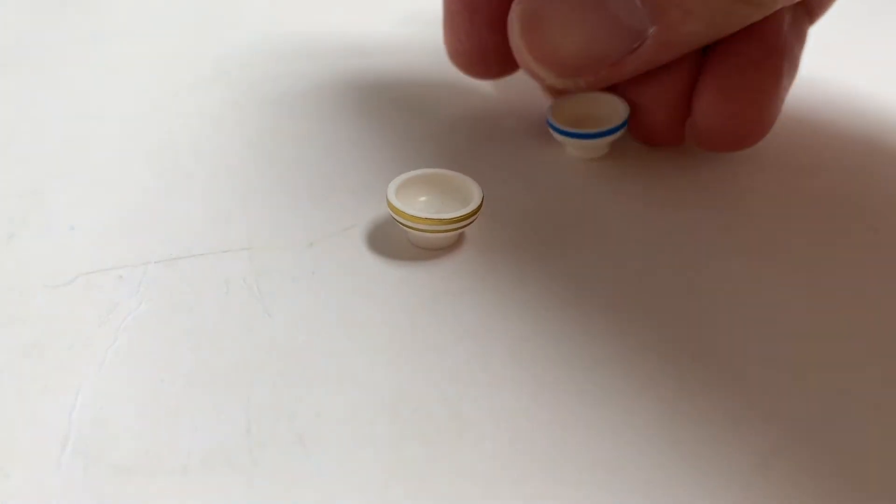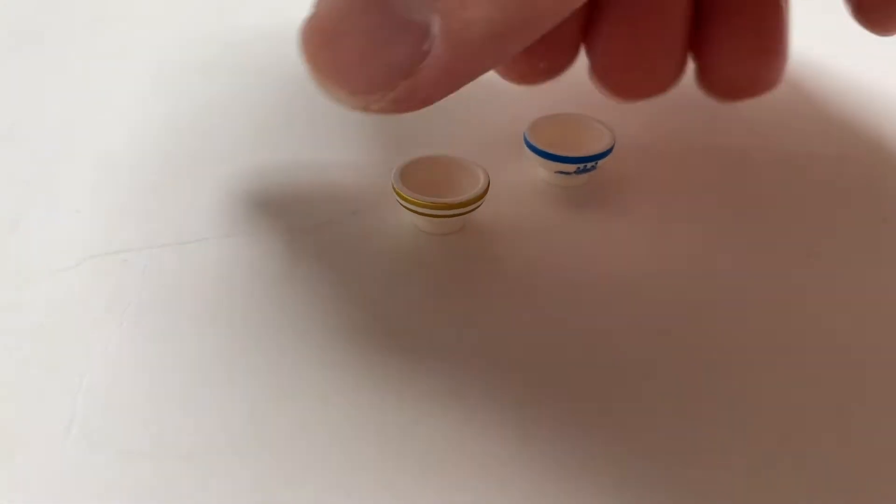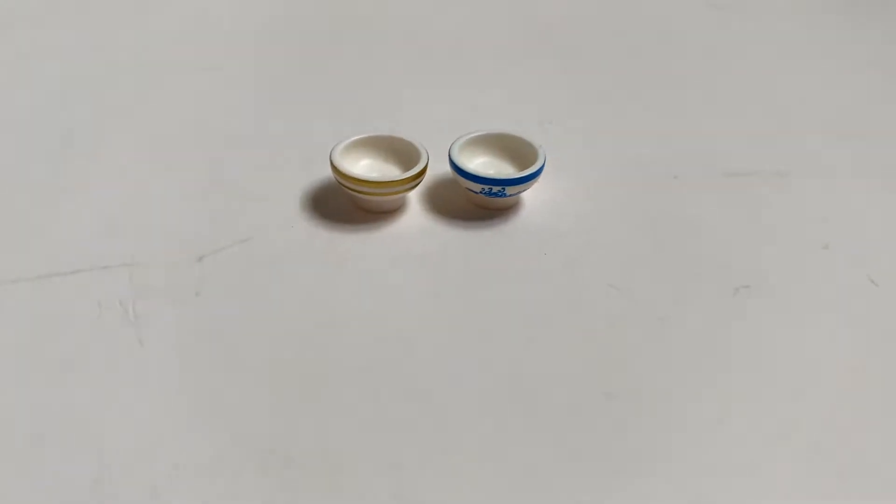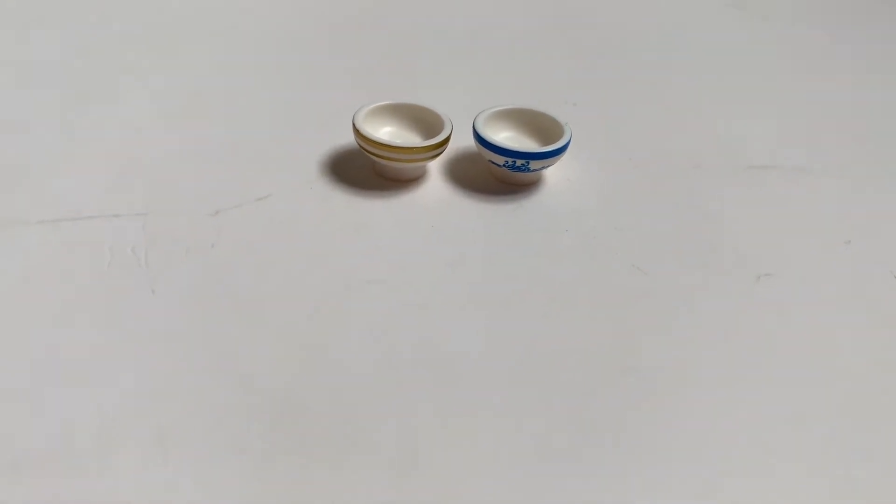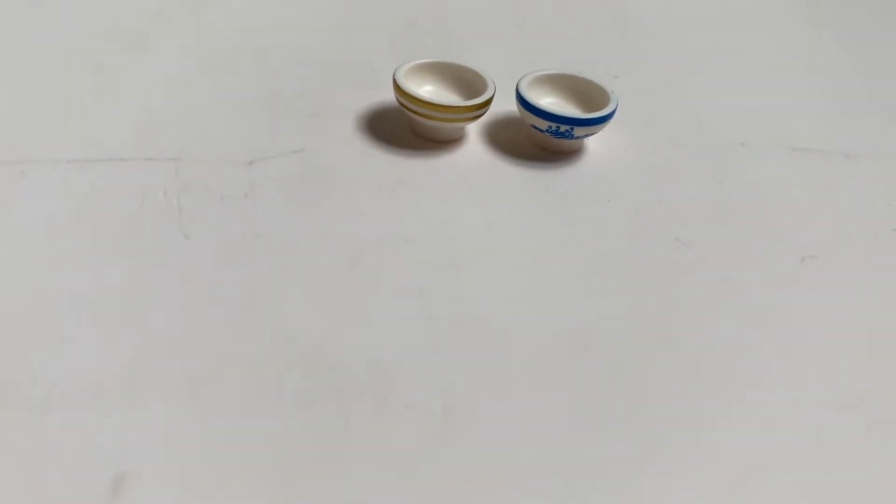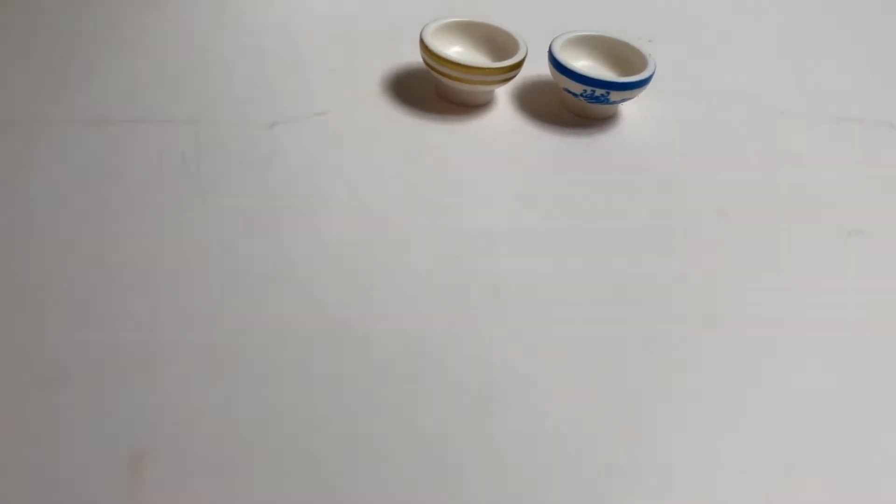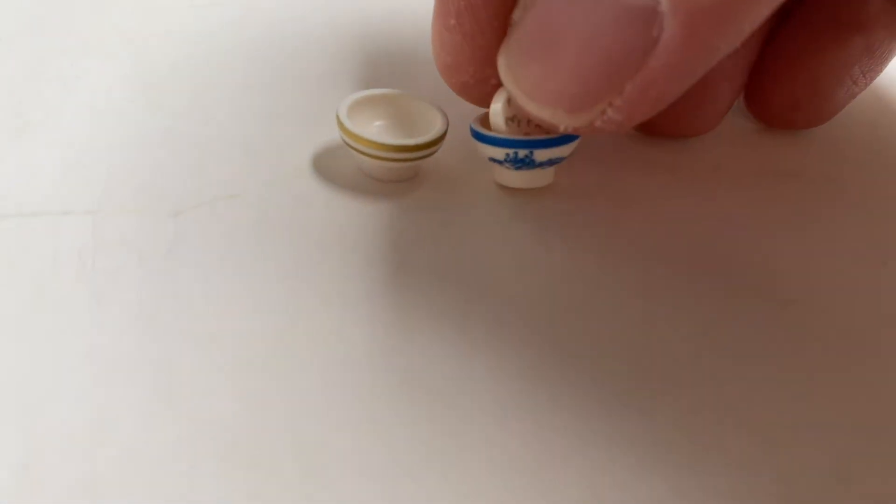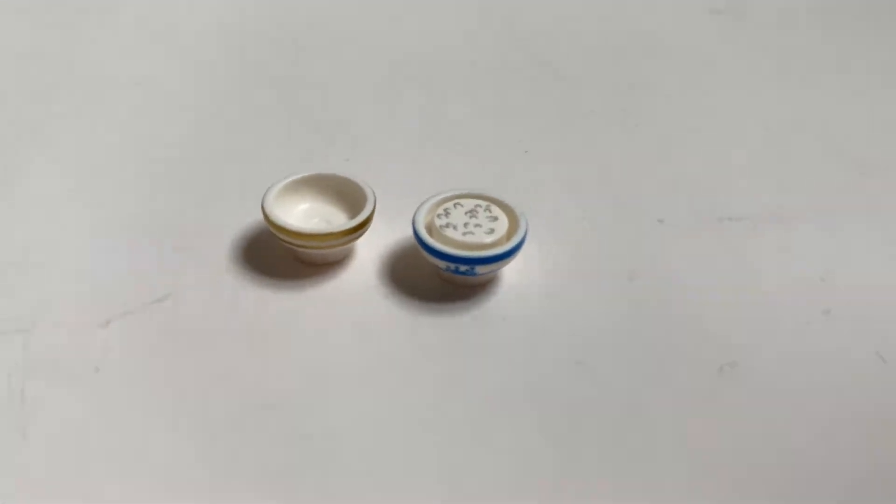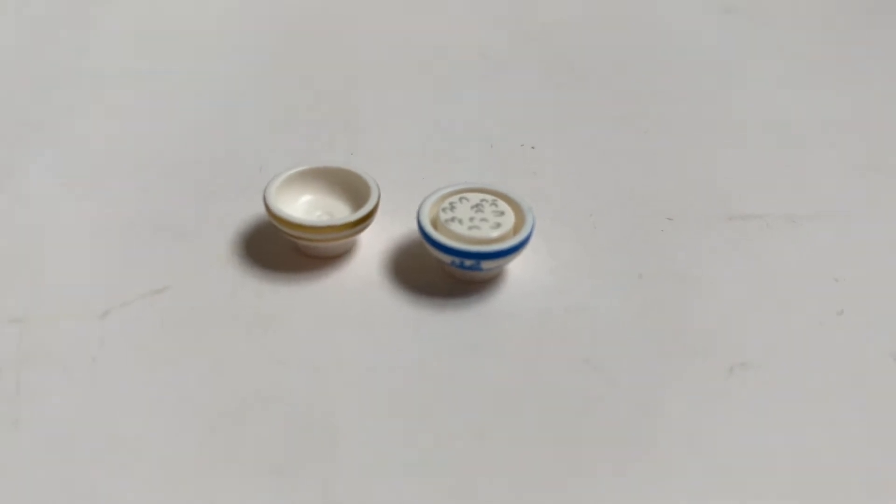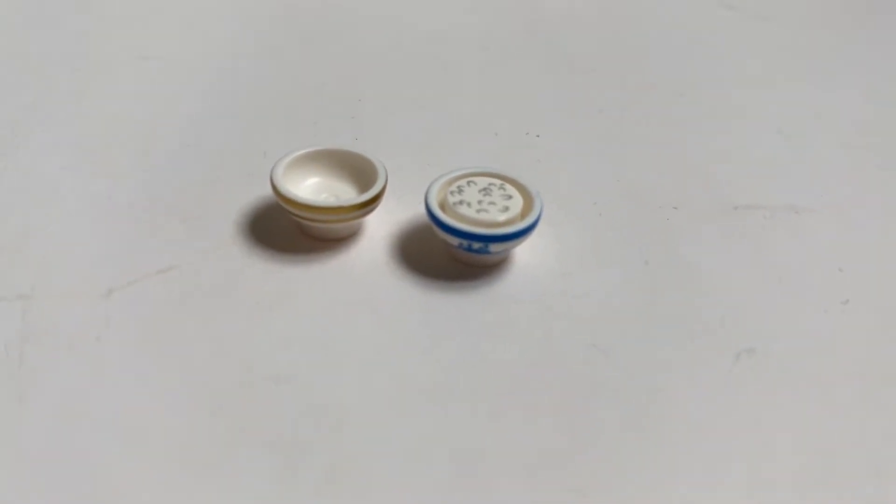And here we have the bowl introduced from the Chinese New Year theme and also from the Ninjago movie minifigures. So what's good here is that you can actually put some flat tile inside the bowl. So here you've got the printed rice pieces from the Chinese New Year set. So you get a bowl of rice here.